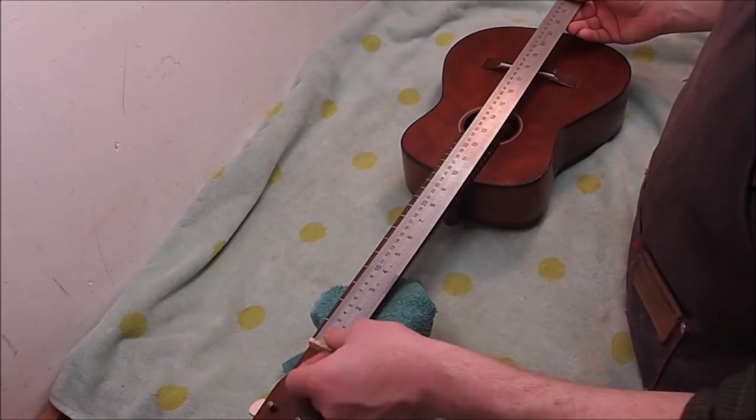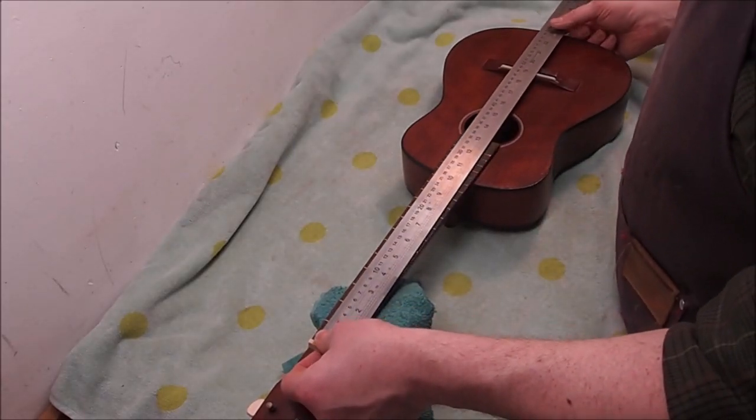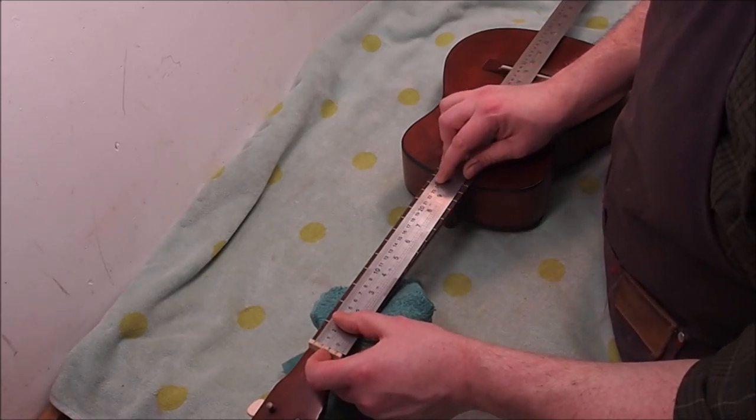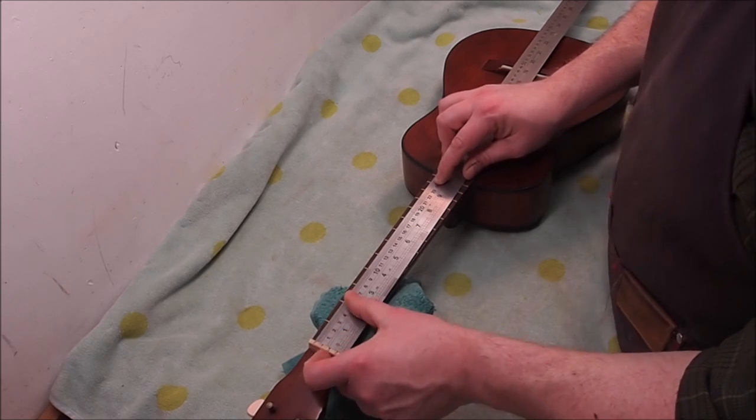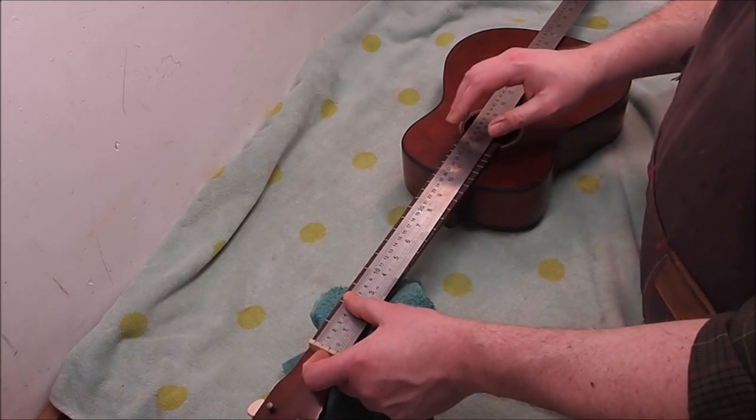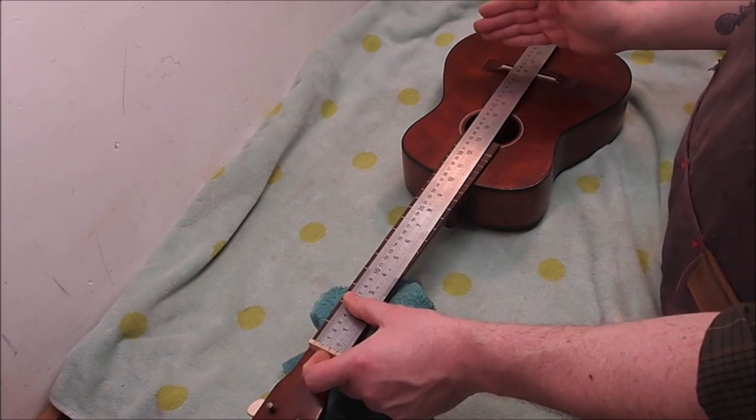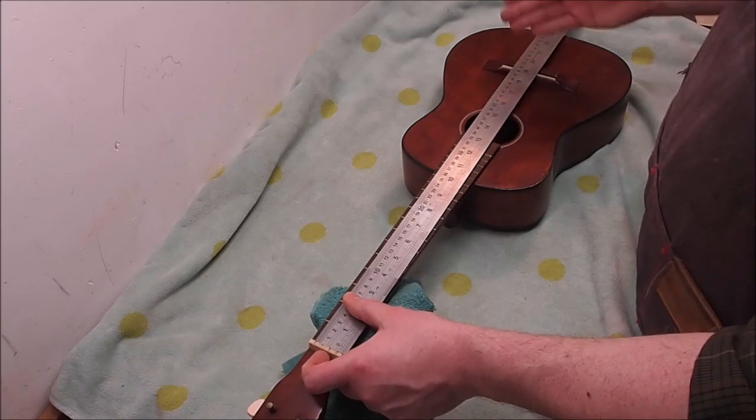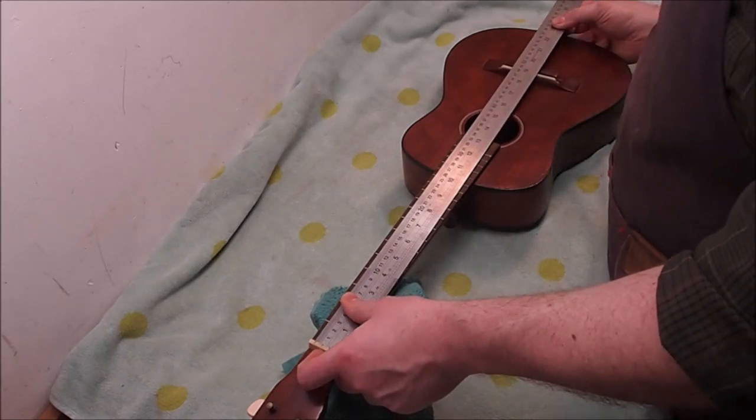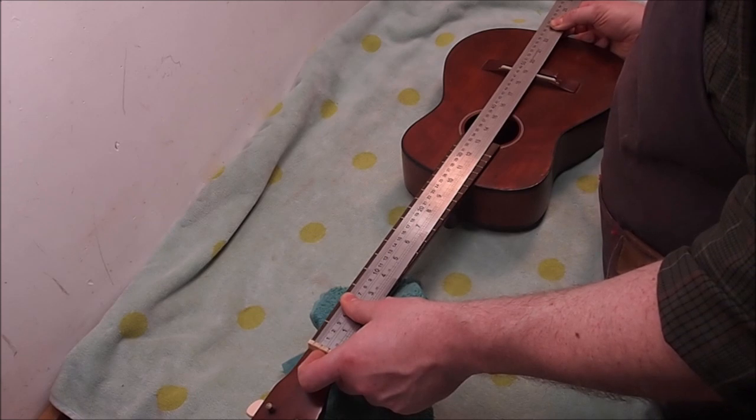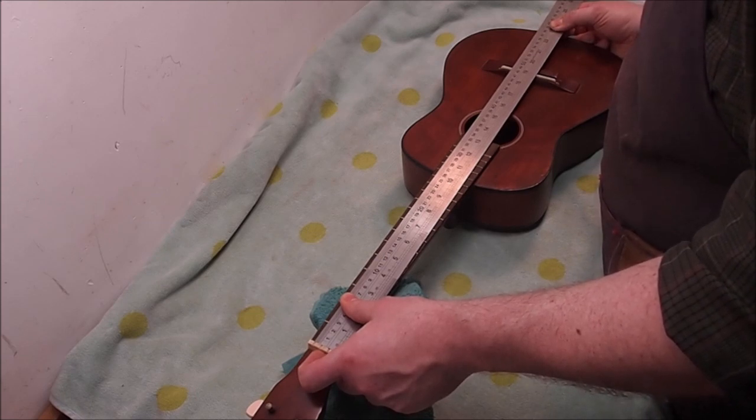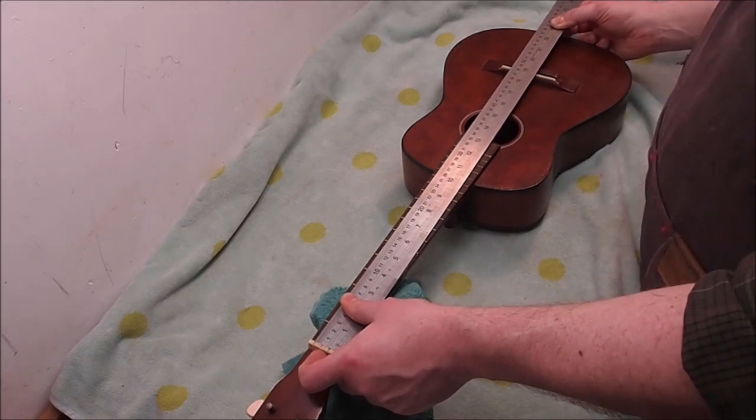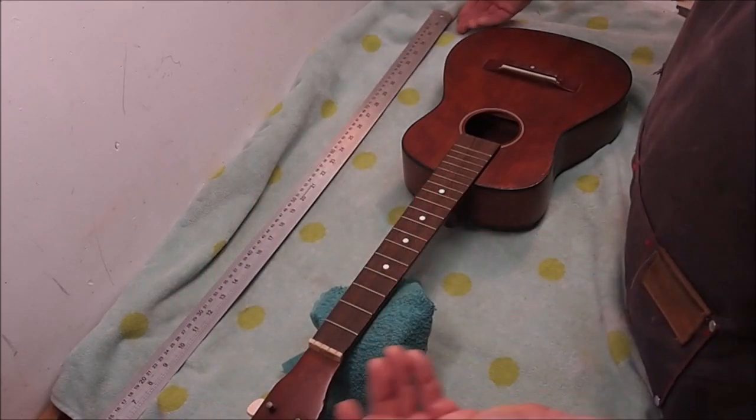The other thing I want to do before we put the strings on is have a cursory glance at the intonation here, because it seemed a little sour before. To the 12th fret we have 243 millimeters, so we would expect the total string length to be about 486, maybe there's a little bit of compensation added to that. Probably not in this era for ukuleles—they just didn't bother, not in this price range anyway. But our total string length here to the front edge of the saddle where the strings take off is about 484, so we're missing about two millimeters there from total string length before compensation.